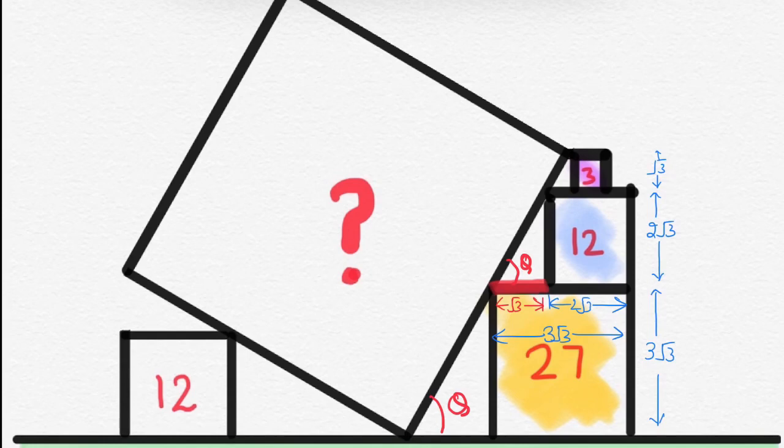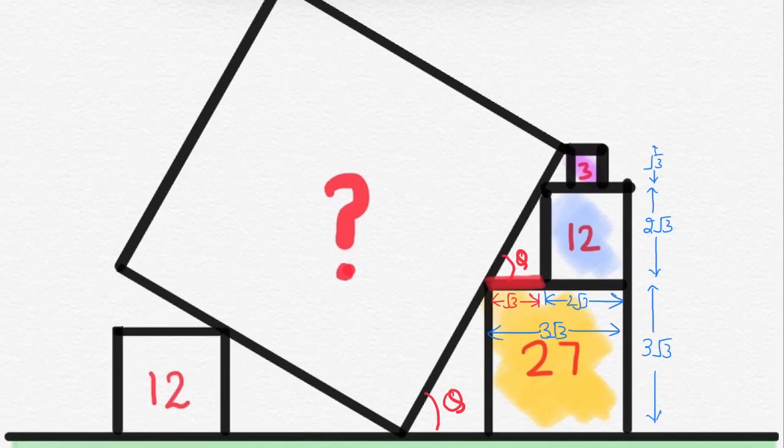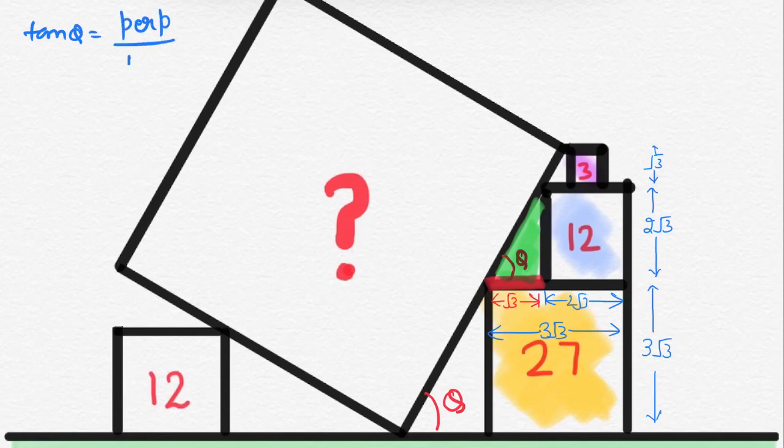And let me assume that angle is theta. Now, let me find the tan theta in this green triangle. So, tan theta equals to perpendicular over base.